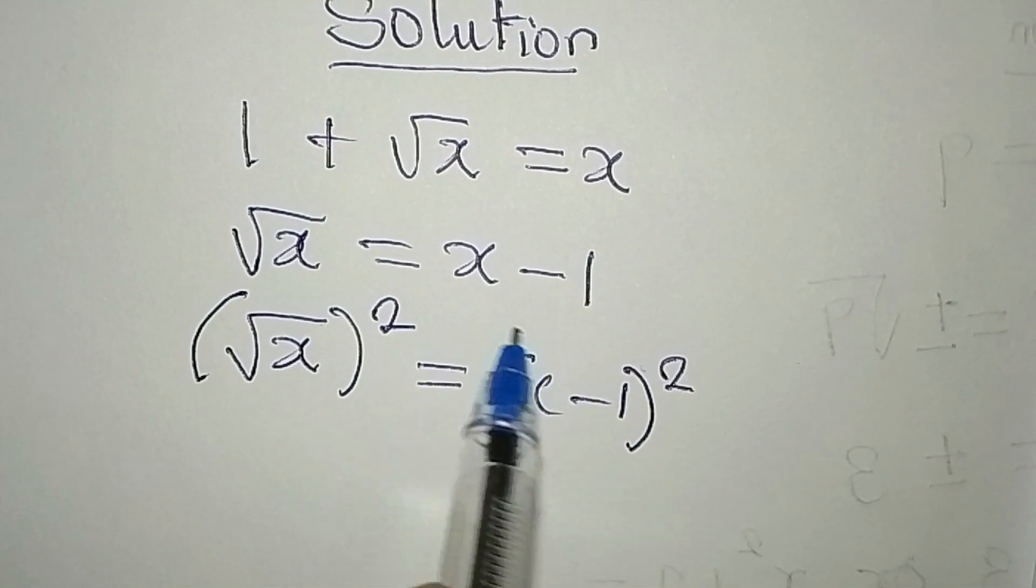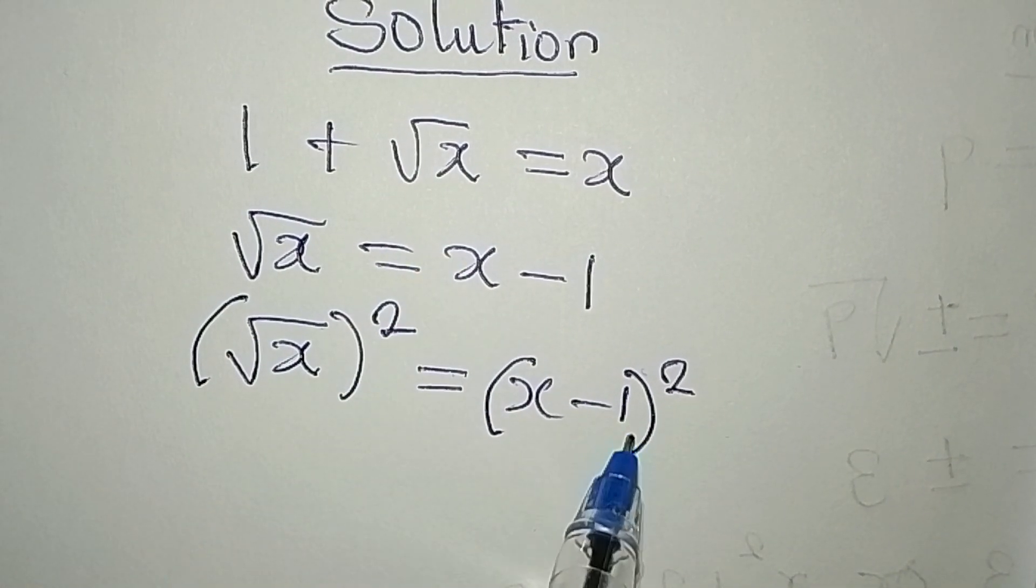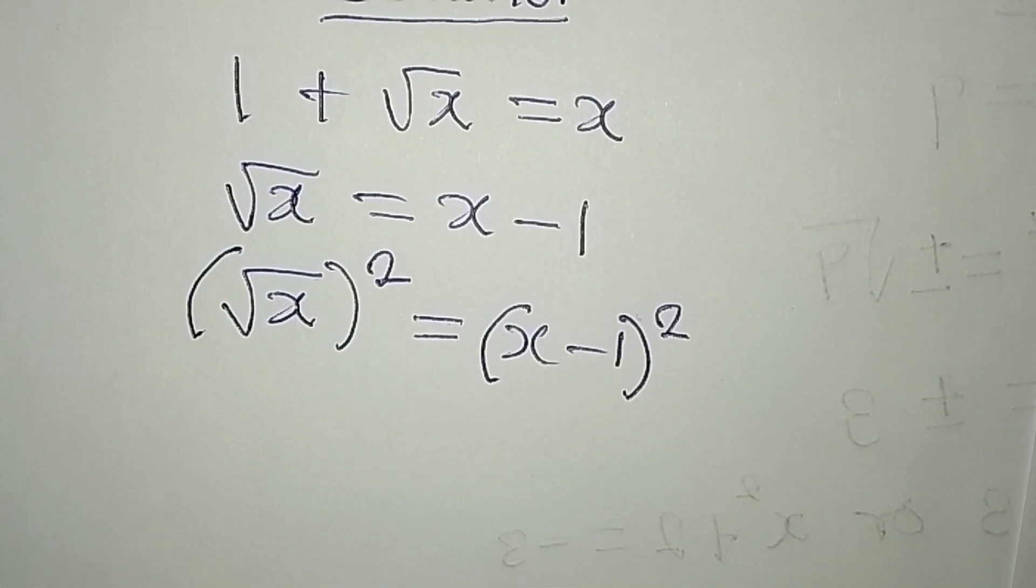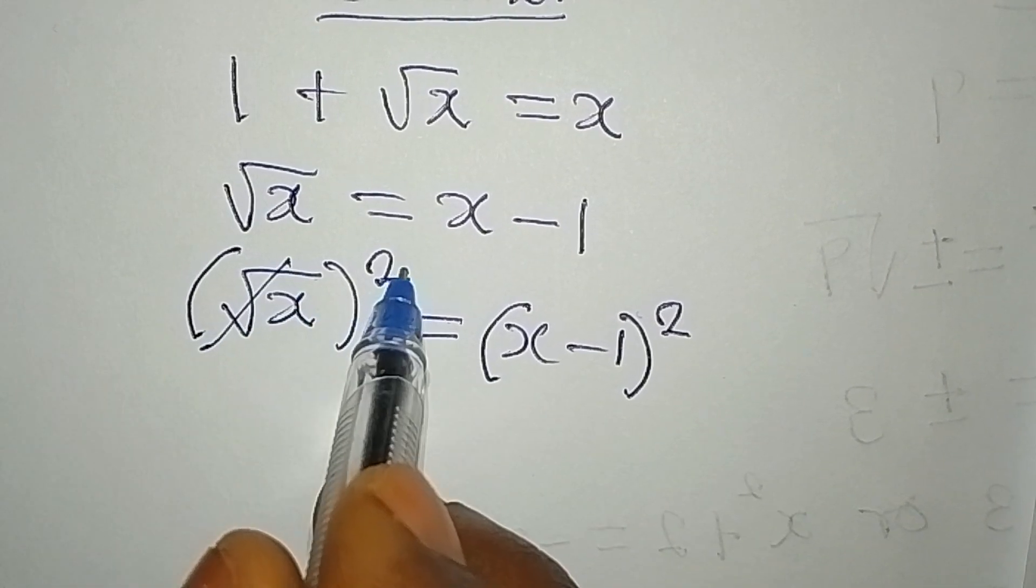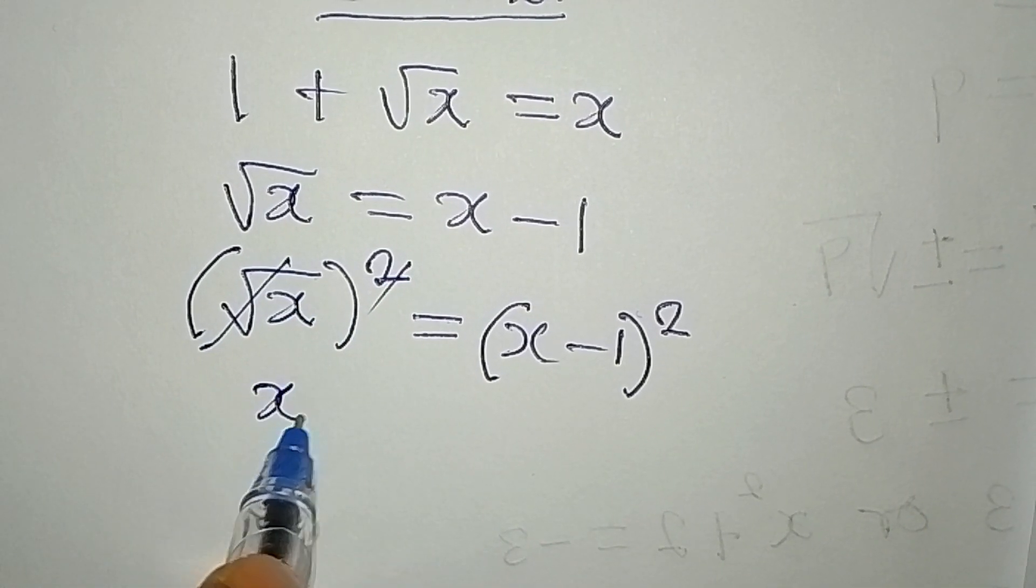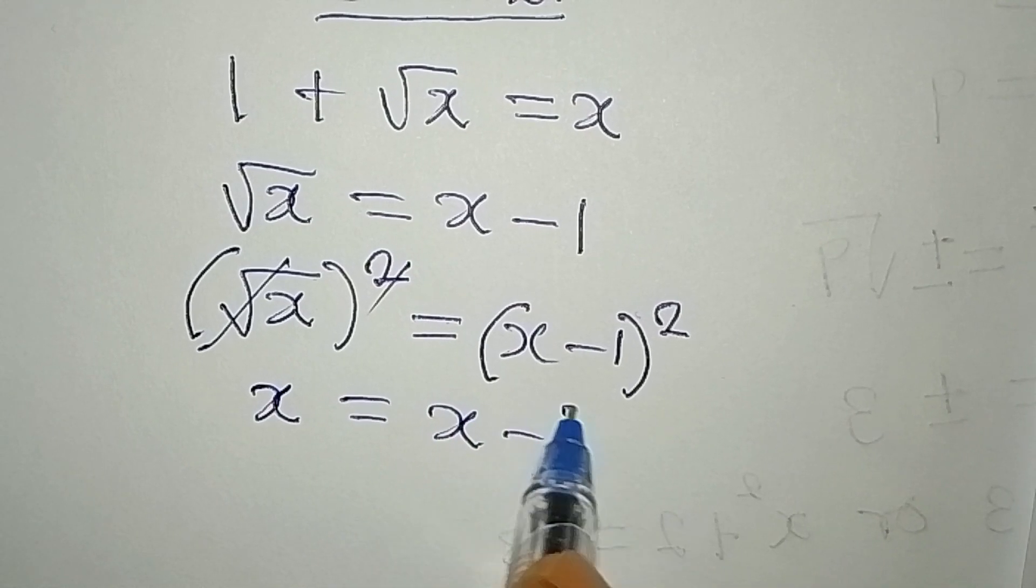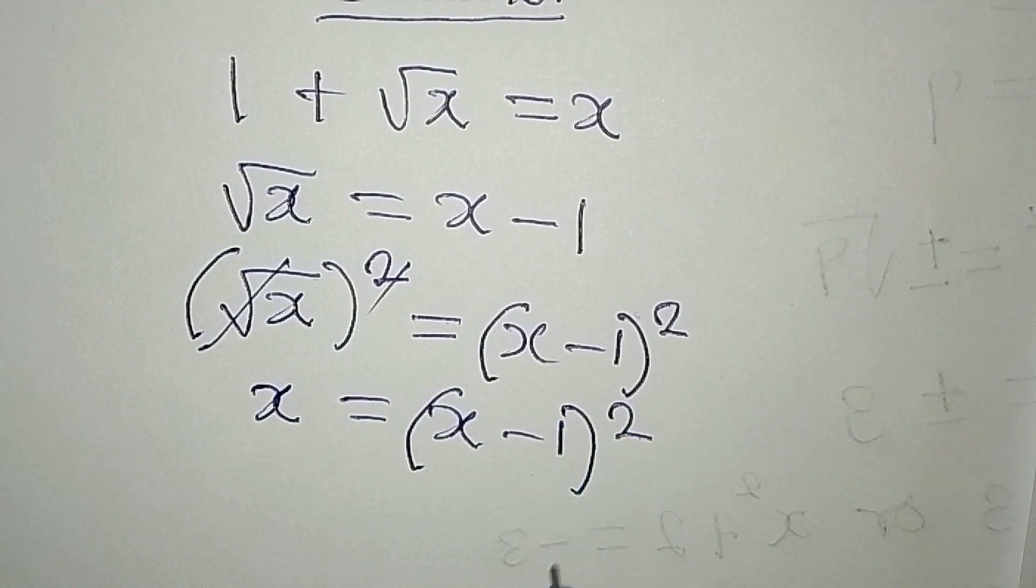And do not square it separately. If you say x squared minus 1 squared, it will be wrong. So what do I do? This is going with this. So that x from here is equal to x minus 1 to the power of 2.